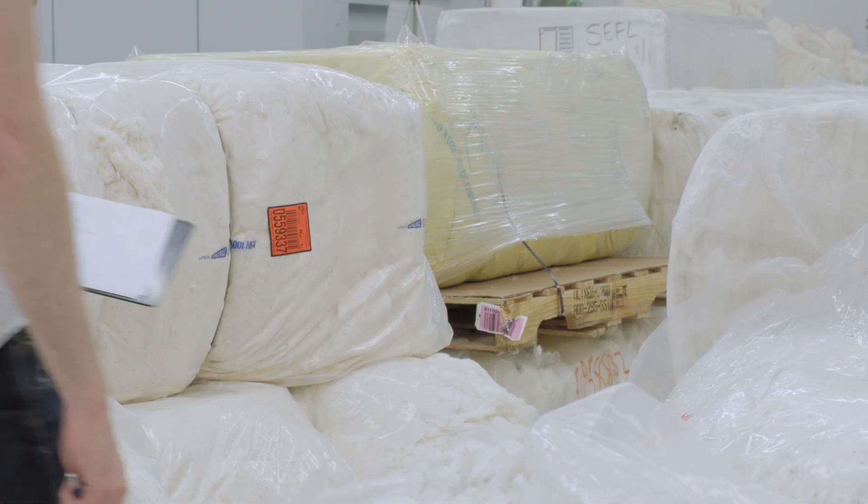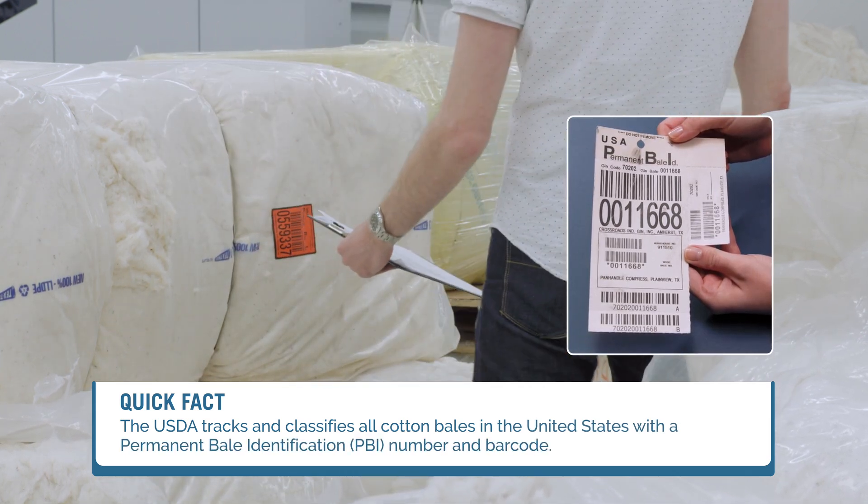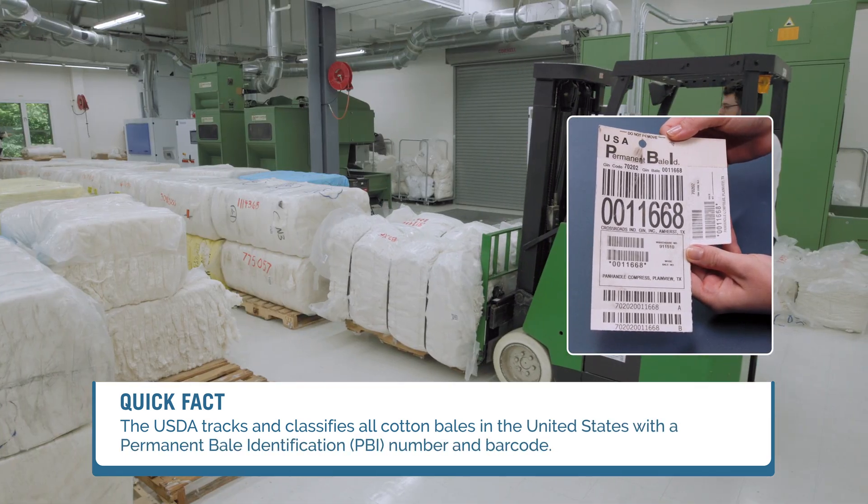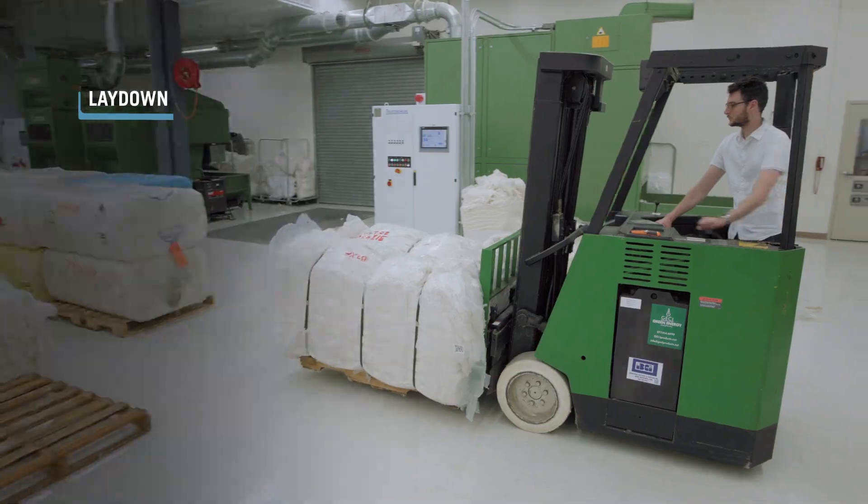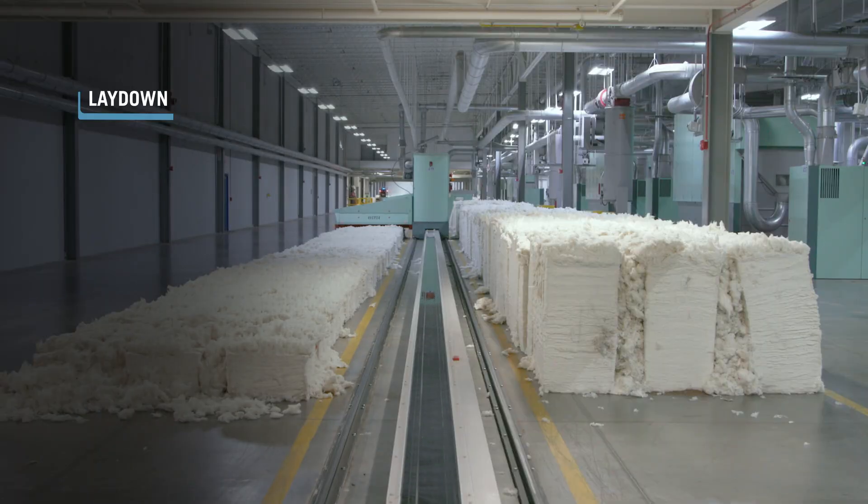After the appropriate fiber properties have been decided on, the selected bales are prepared and arranged for their placement into a laydown. A typical laydown may include as few as 40 bales or as many as 90 or more.